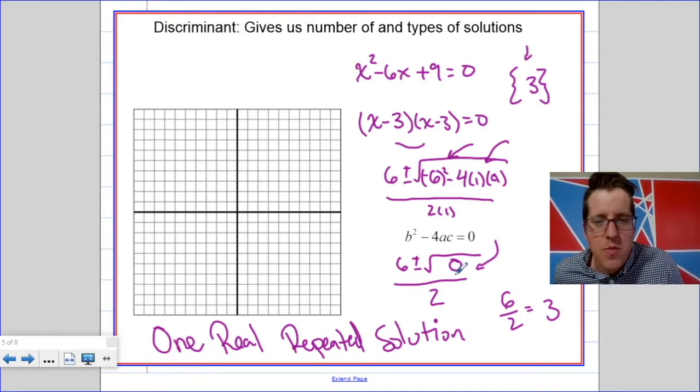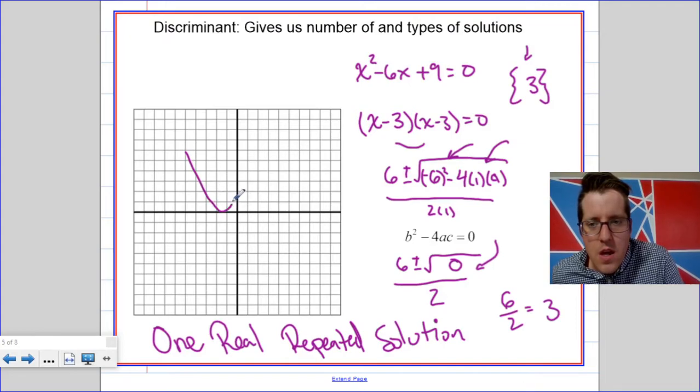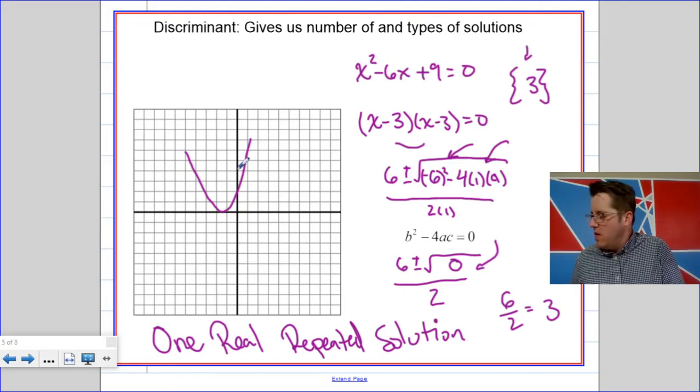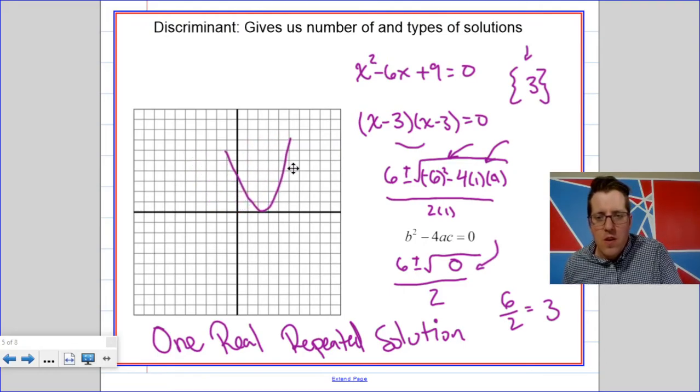So, if you know how to factor that, it's a little bit faster this way, but it helps us see what happens when the discriminant is 0. In cases like this, the graph is going to hit and bounce off the x-axis. It's going to hit in one place and bounce off the x-axis.